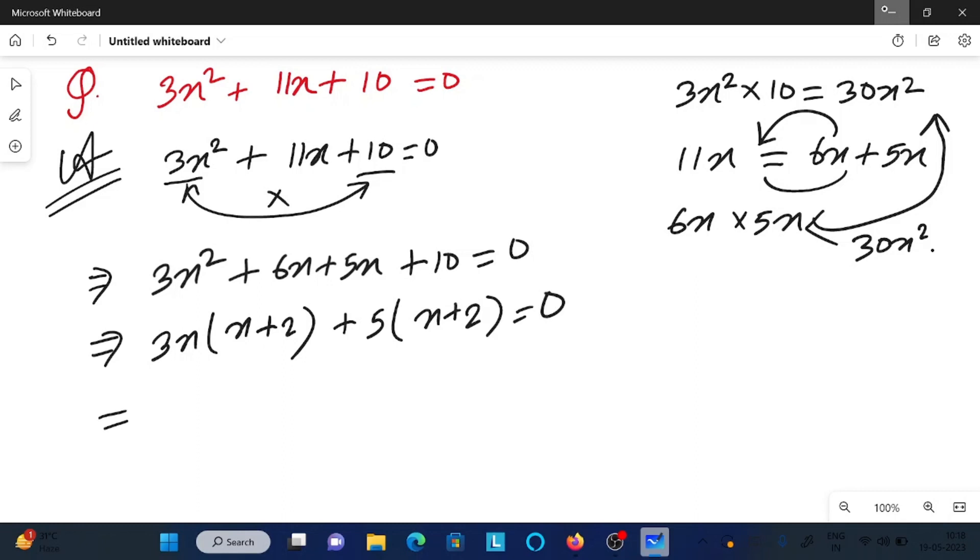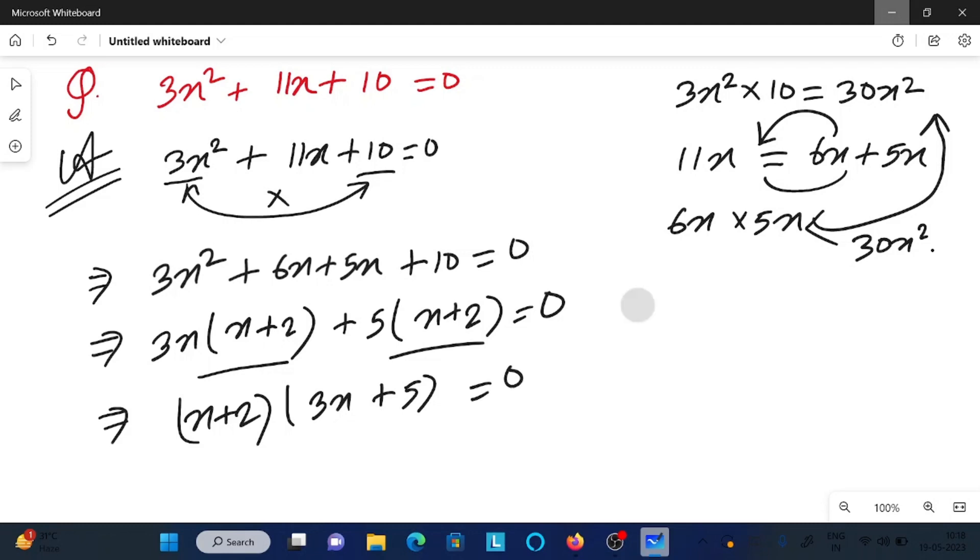Now taking the common: 3x and x plus 2, then 5 times x plus 2, equal to 0. Or this place x plus 2 is common, take that, and that becomes 3x plus 5 equal to 0.